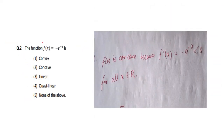Question number two: the function f(x) = −e^(−x). The options are: option 1 — convex, option 2 — concave, option 3 — linear, option 4 — quasi-linear, option 5 — none of the above. We need to find out the concavity or convexity of this function.